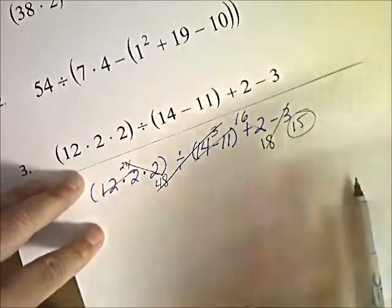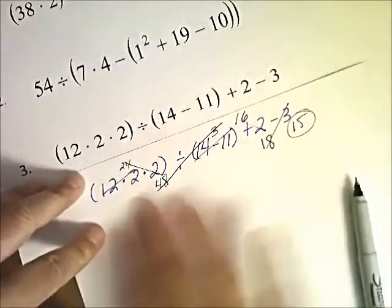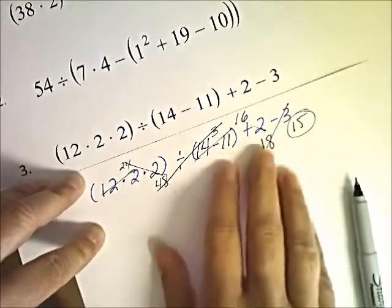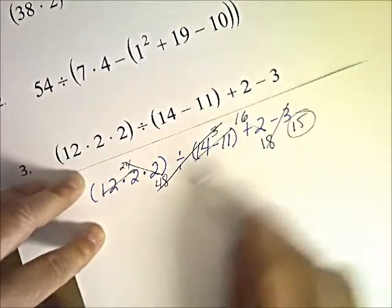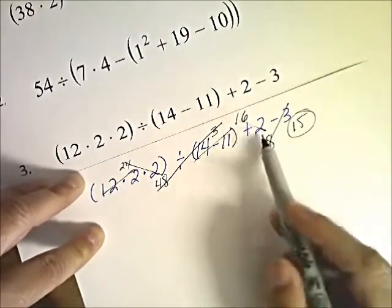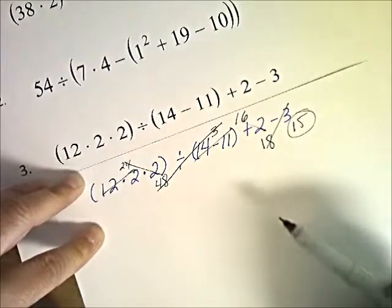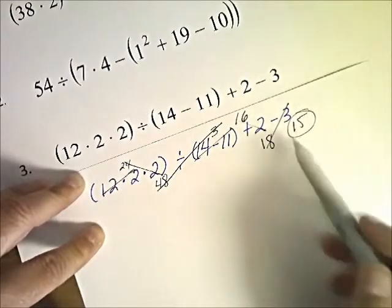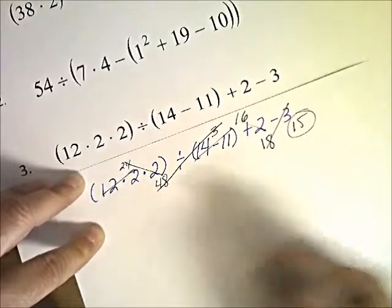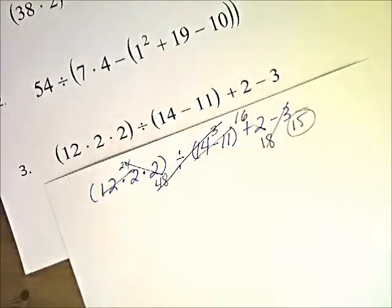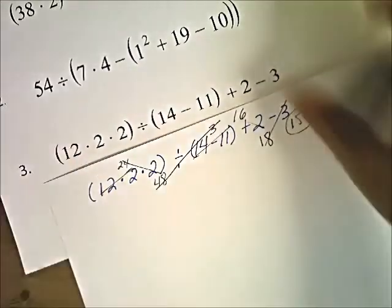Some students say they can do the whole thing in their head, but show a little of your work so I can see where you made a mistake — maybe you got to 16 minus 3 and then added your 2. You've got to be careful, even doing it this way, to use the correct order of operations. Those are some example problems of order of operations.